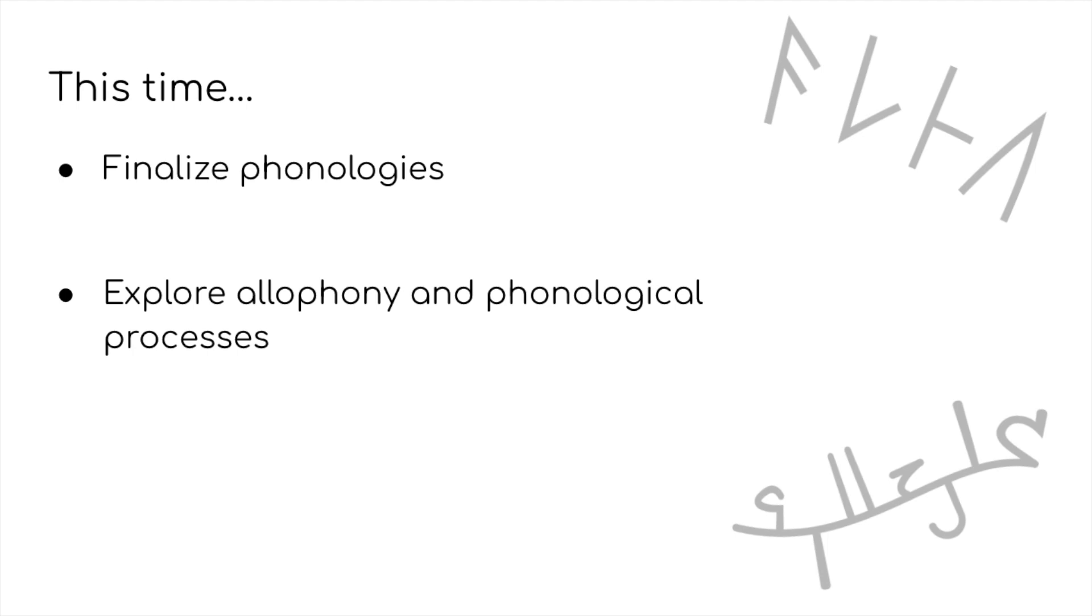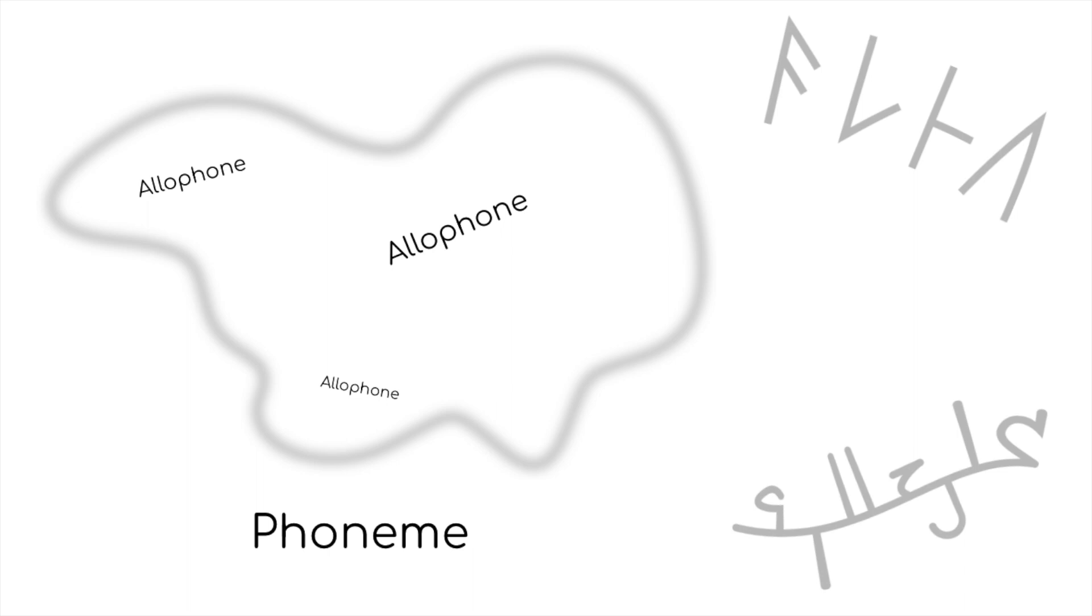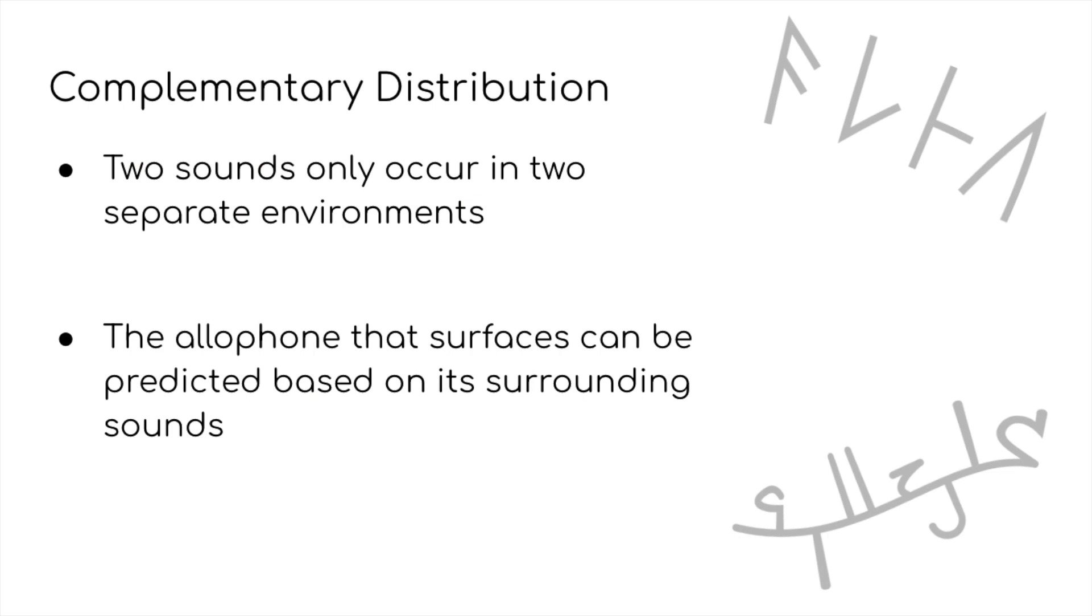Firstly, let's review allophony. As discussed in the previous episode, allophones are the various phones that make up a given phoneme. We also mentioned that each allophone occurs in a different phonological environment. This is called a complementary distribution, where the two phones never appear in the same context, which means that the allophone that surfaces in a given word can be predicted from the structure of that word.